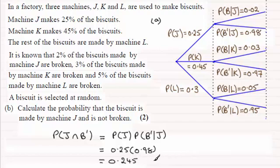Or you might want to give it as an exact fraction. If you do, it will be 49 divided by 200. 49 two hundredths.